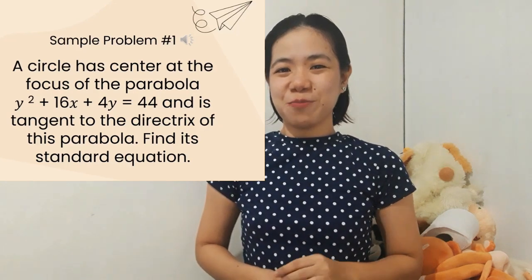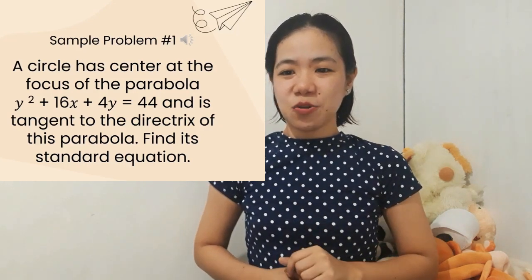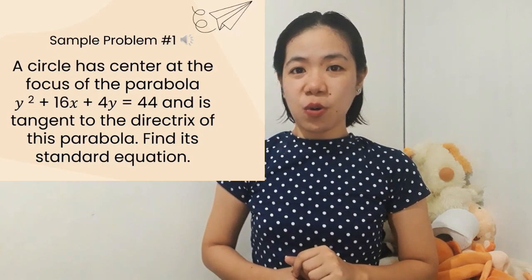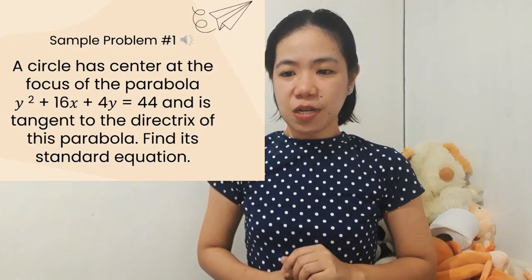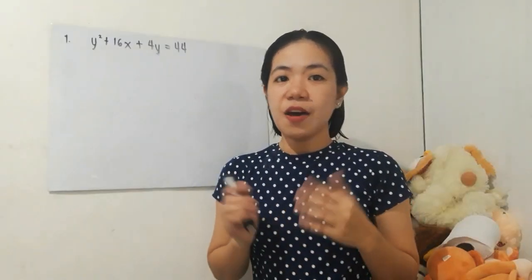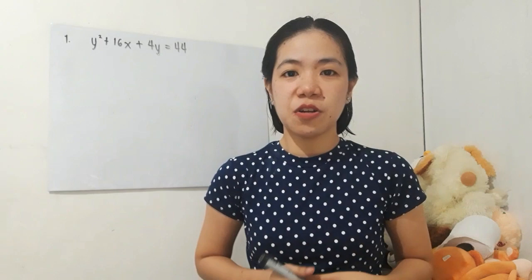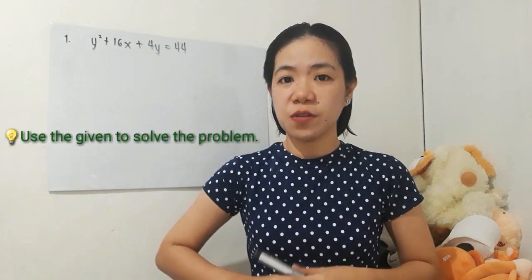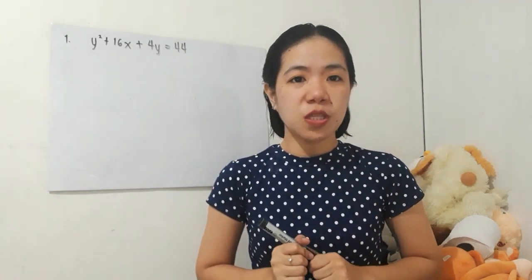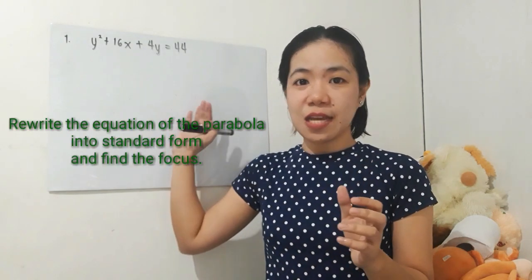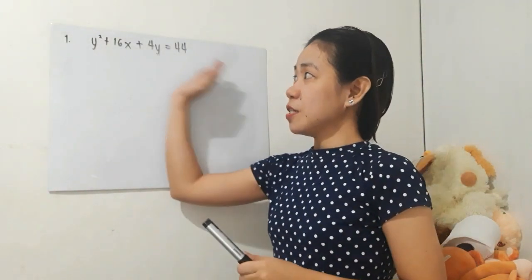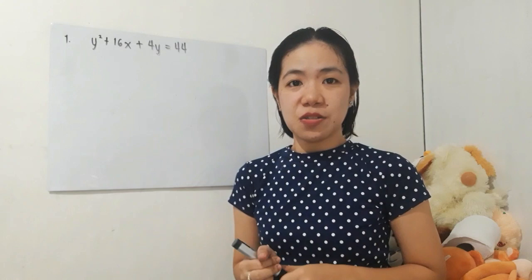Let's begin with sample problem number 1. A circle has its center at the focus of the parabola y squared plus 16x plus 4y equals 44, and is tangent to the directrix of this parabola. Find its standard equation. So for us to find the standard equation of the circle, we have to make use of the given, which is the equation of the parabola. First, we need to rewrite this into its standard form so that we can find the focus. Let's begin rewriting this parabola into its standard form.